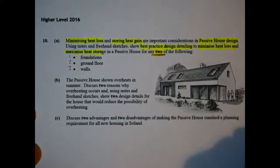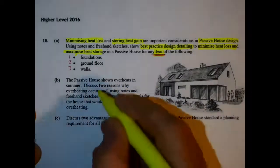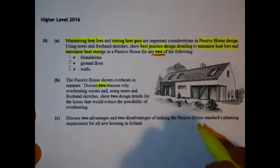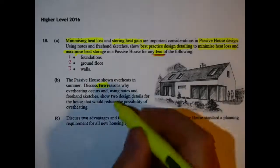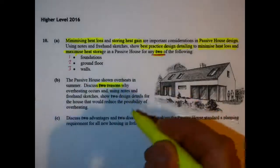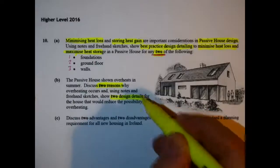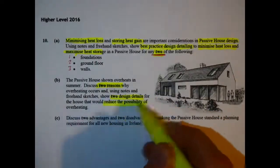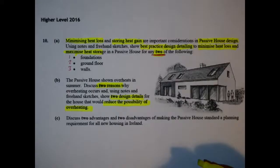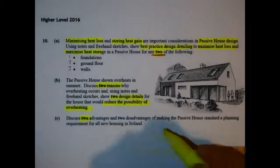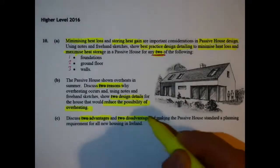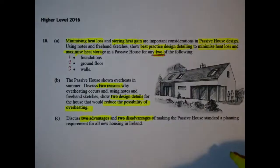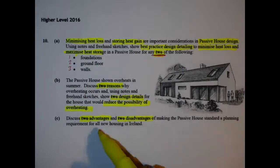We must answer two of those and it is about best practice, minimizing heat loss and maximizing heat gain. In part B of the question we have to discuss two reasons why overheating occurs and use notes and freehand sketches to design details to reduce the possibility of overheating. Part C is two advantages and two disadvantages of making every passive house standard as a planning requirement for all new houses in Ireland.